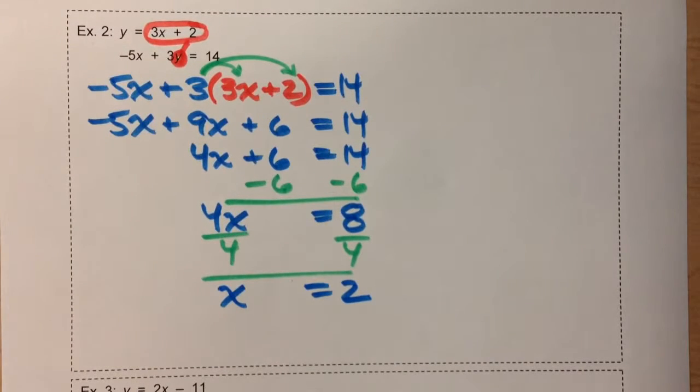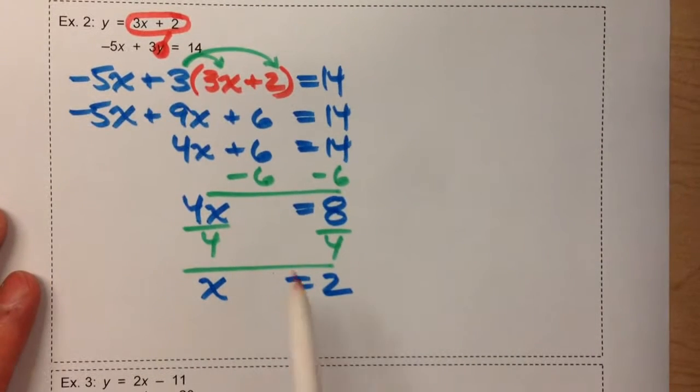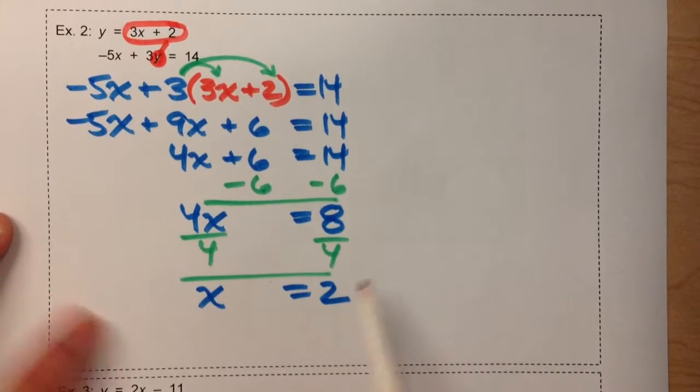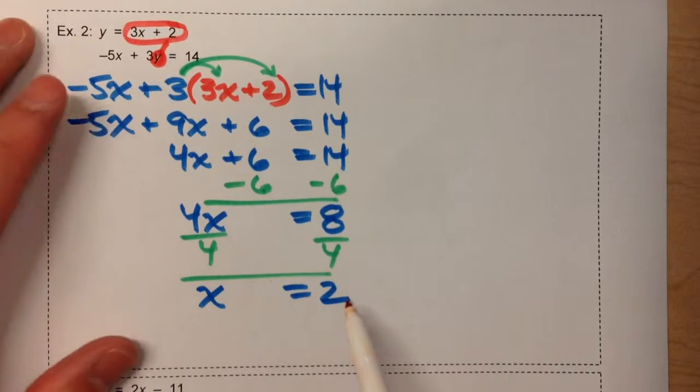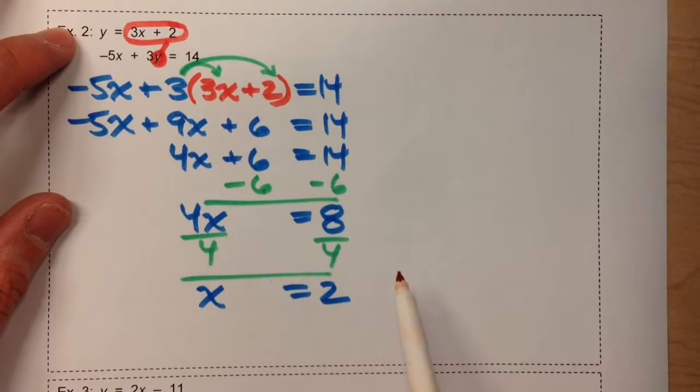So we're halfway there. We've got our x-coordinate. But don't forget, when we're solving a system of equations, we're trying to find the point of intersection. So we've got the x-coordinate. Now we need to find the y-coordinate. We're going to take our x value and put it back into one of our original equations.